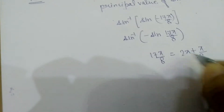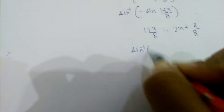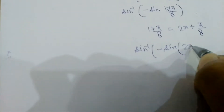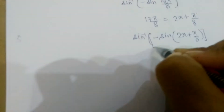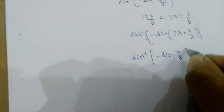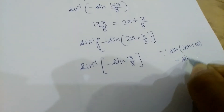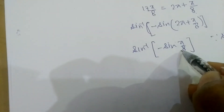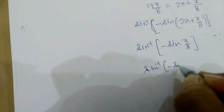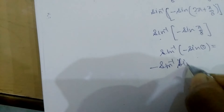So we get sin⁻¹(-sin(2π + π/8)). Since sin(2π + θ) = sinθ, this becomes sin⁻¹(-sin(π/8)). Now, sin⁻¹(-sinθ) = -sin⁻¹(sinθ), so we can write this as -sin⁻¹(sin(π/8)).